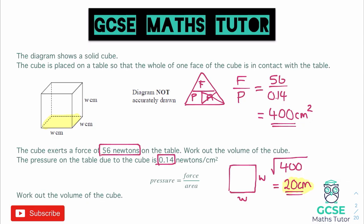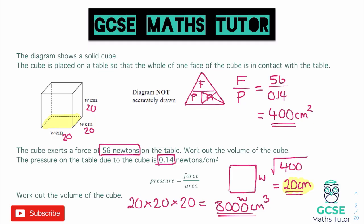Now that we know all side lengths are 20 centimetres, because it's a cube, to work out the volume we do 20 multiplied by 20 multiplied by 20. Type that into the calculator — or you can probably do it without — and the answer comes out as 8,000. So the volume is 8,000 centimetres cubed, and that's our final answer. There were no unit conversions in that question, but it required thinking carefully about the diagram, using the formula to find the side length, and then getting the volume.